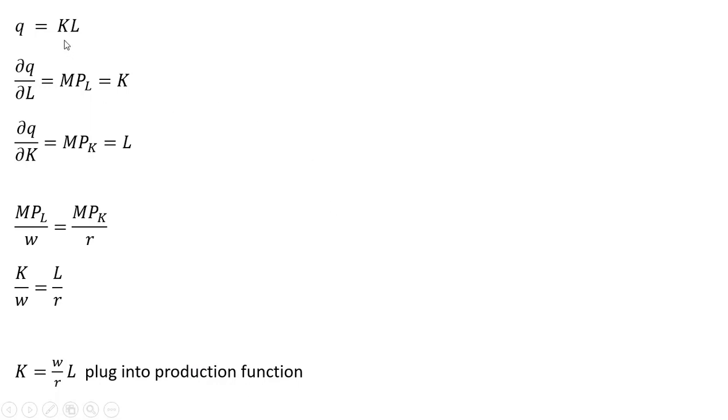Up here in the production function, where we see K, we're going to plug in this result. So for K, I got W divided by R times L. And then there's still another L here.